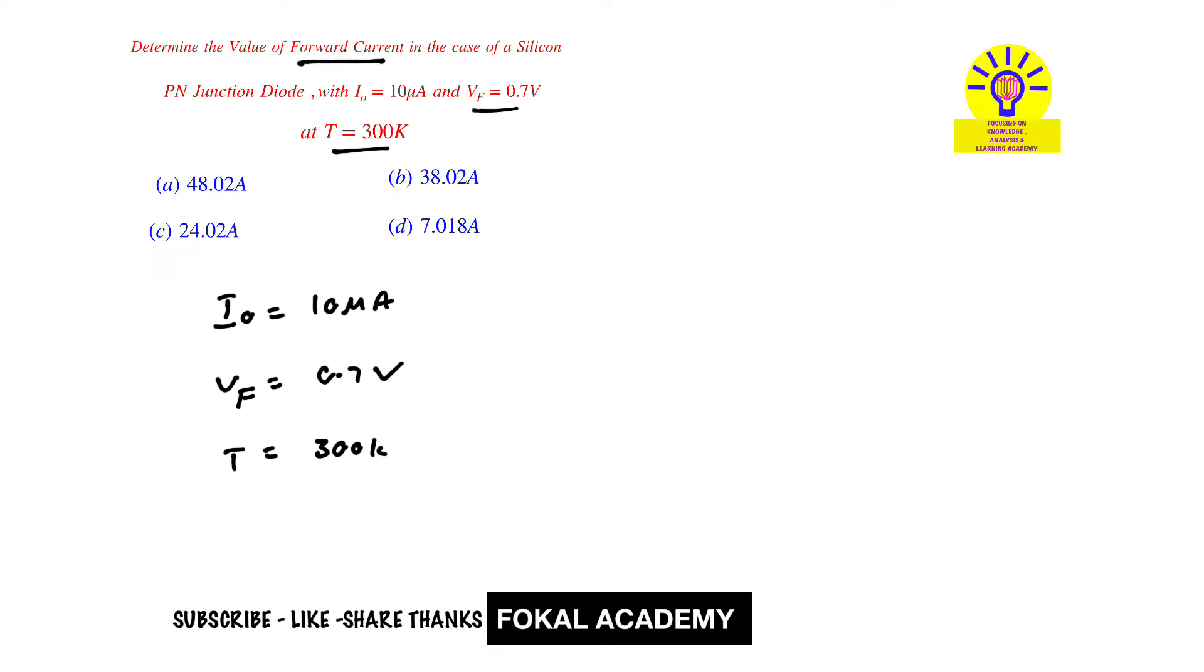Recall the relation between these parameters. We have one relation: I equal to I₀ into e power V by eta Vt minus 1. In this equation, eta is a constant value and it is 2 for silicon.